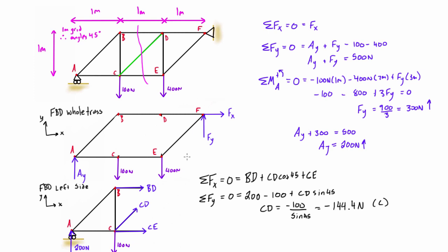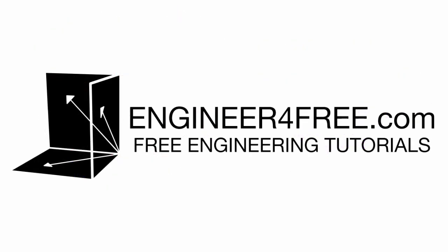That answers the question. There were two steps: step one, free body diagram of the whole thing to find the reactions; step two, cut where you want and solve for those members. In this case, we found CD to be 144.4 newtons in compression, which answers the question, and we're going to move on to the next video.